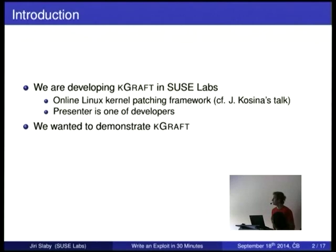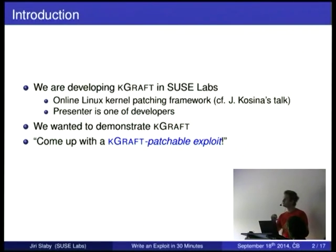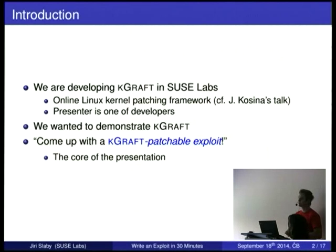K-Graph is working somehow and we wanted to demonstrate how it works for customers. So we decided to come up with a K-Graph patchable exploit so that we can explain to the customer: here you can see a kernel with a bug, here is an exploit which can use the hole, and now we applied a K-Graph patch and the exploit doesn't work anymore.